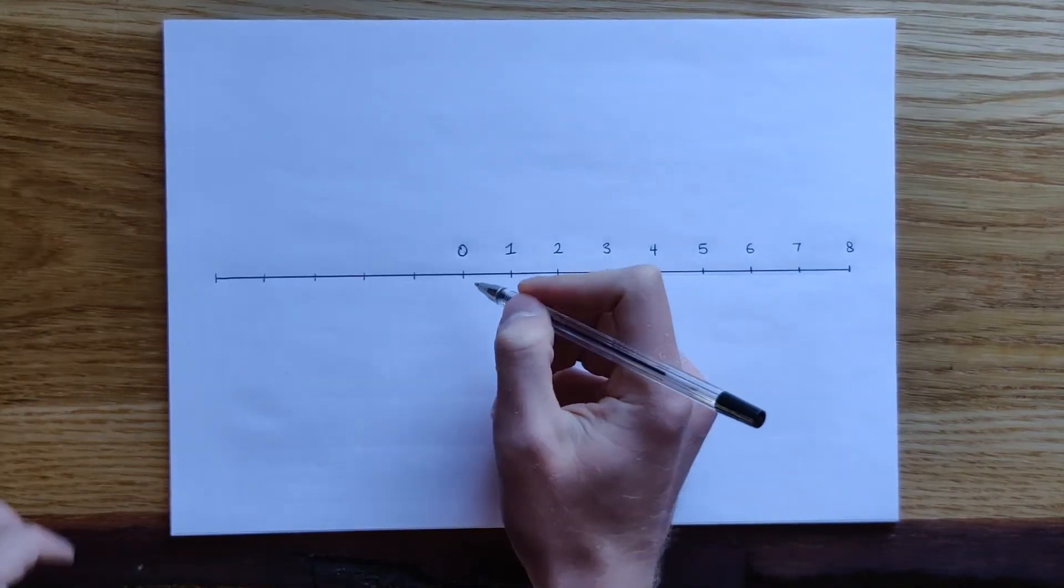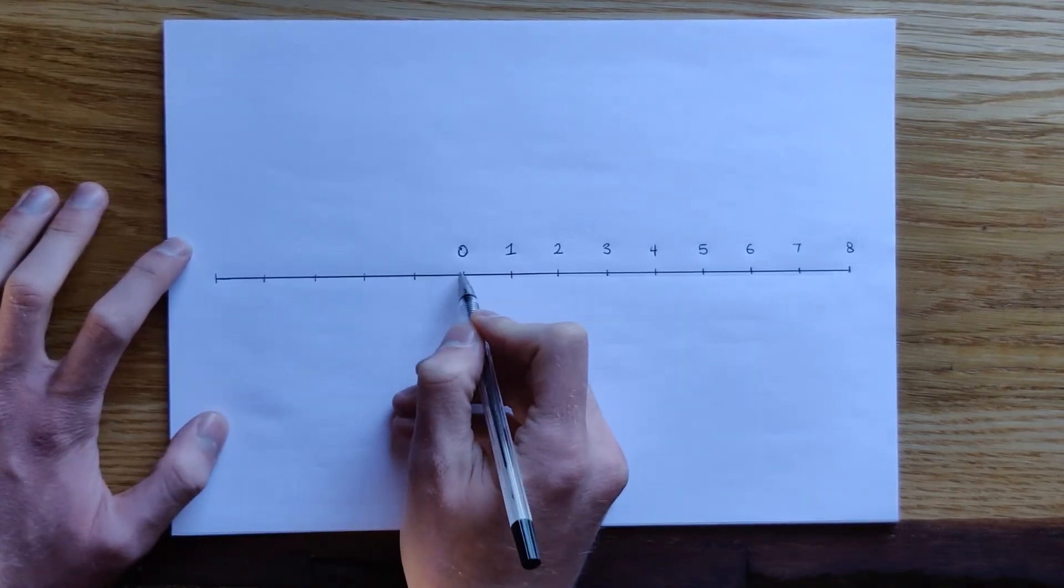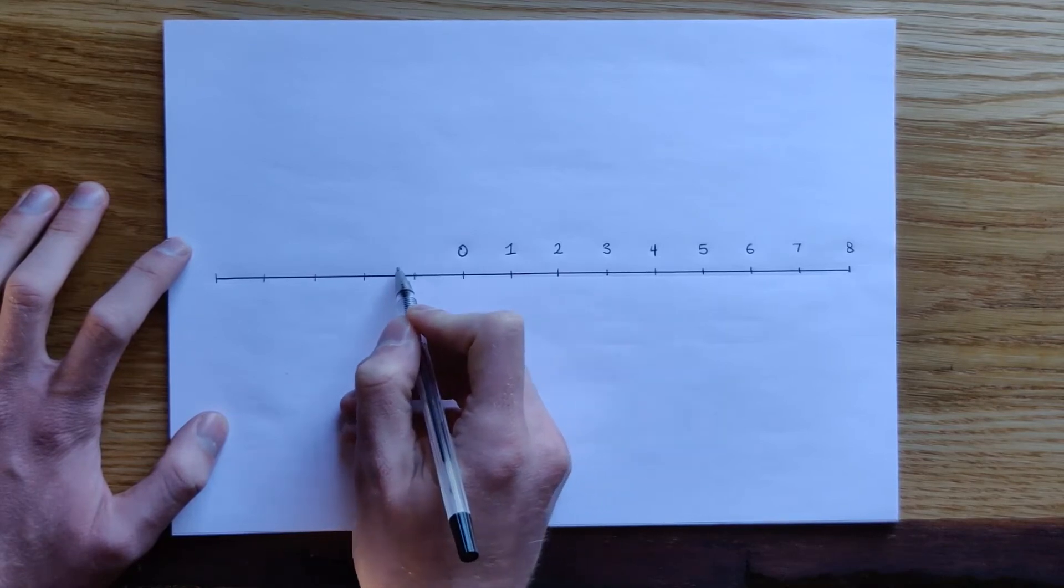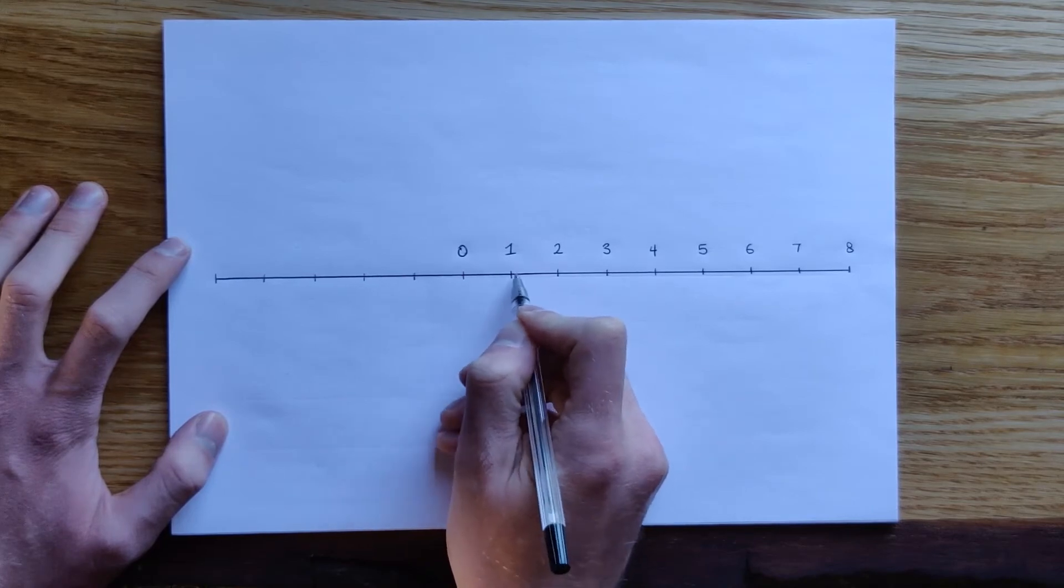Now, as you can see, we've got some more space for what would happen if we extended our number line past zero. So just here, each of these intervals, each of these spaces...